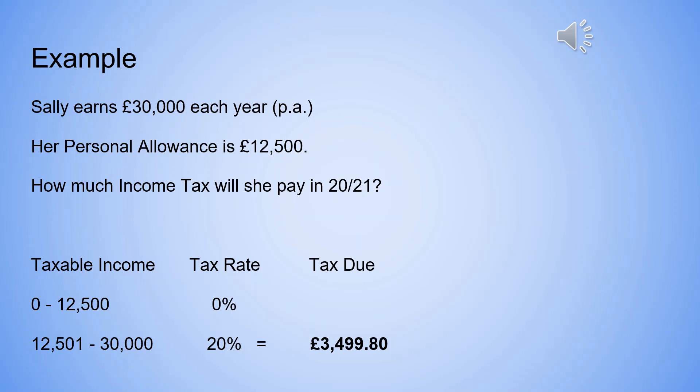The next band will be from £12,501 to £30,000 — in other words £17,499 — and that will be taxed at 20%, which gives her a tax bill for the year of £3,499.80. She won't pay that in one lump sum; it will be divided over the 12 months of the year.